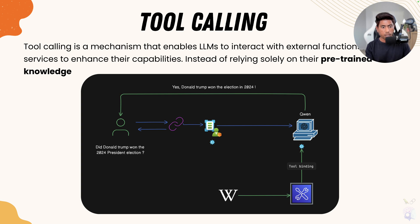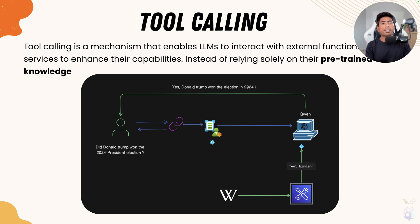You will notice that in this diagram, you are going to ask the same question — did Donald Trump win the 2024 presidential election — but this time the model is going to have a tool binding with external tools. In this case, it has a binding with the Wikipedia tool, and then it is going to get the response from Wikipedia and return it to you.